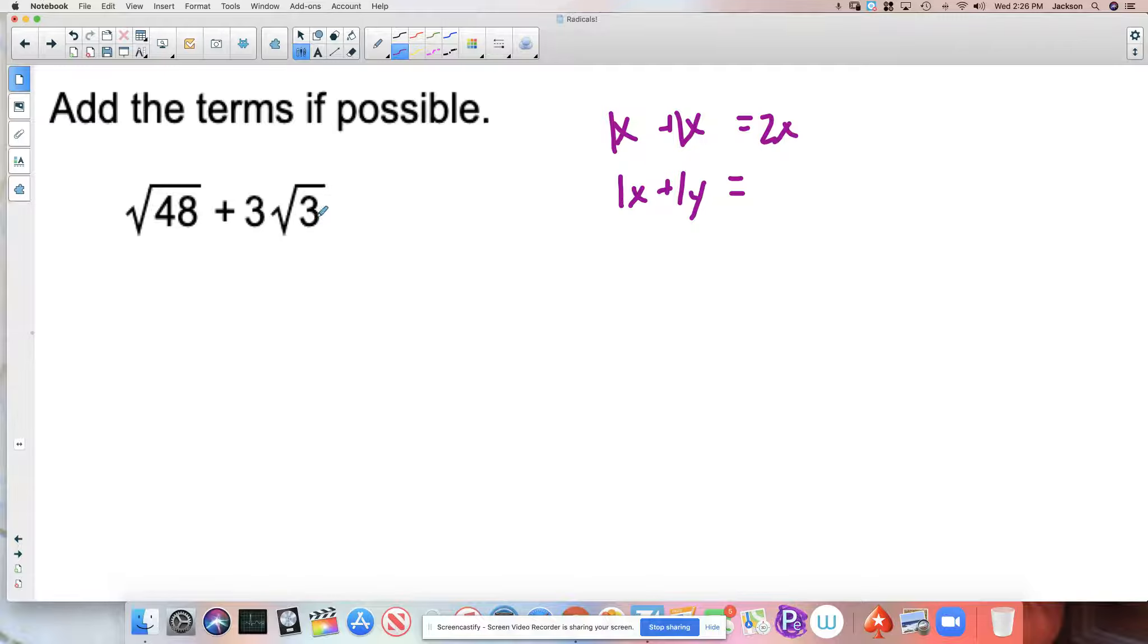If the number under the radical is different, I can't add them, at least not right away. So this does not become, you know, 48 plus 3, which is the square root of 51. That's not how this works.